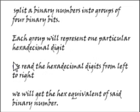Now, if we split a binary number into groups of four binary bits, then each group will represent one particular hexadecimal digit. And if we read the hexadecimal digits from left to right, we will get the hex equivalent of the said binary number.